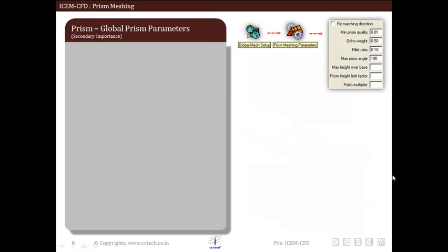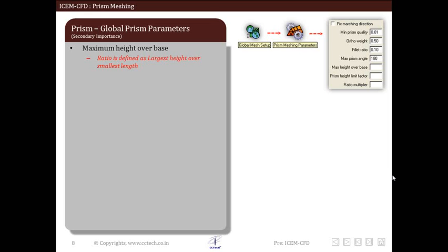Now let us see the next parameter that is maximum height over base. It is the ratio for prism defined as maximum height over smallest length. This sets the limit to ratio of prism and creates only those prisms which have ratio less than specified.